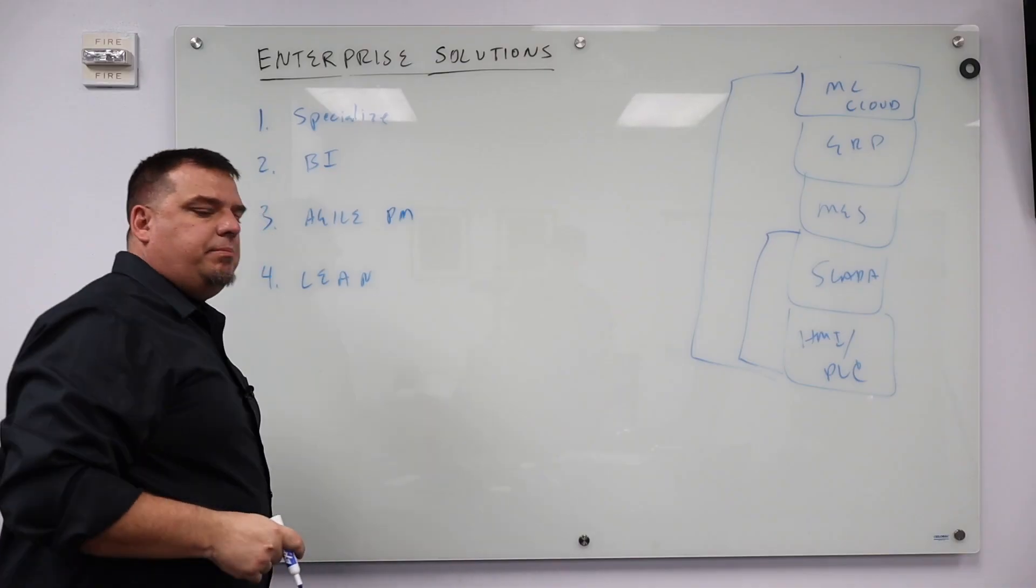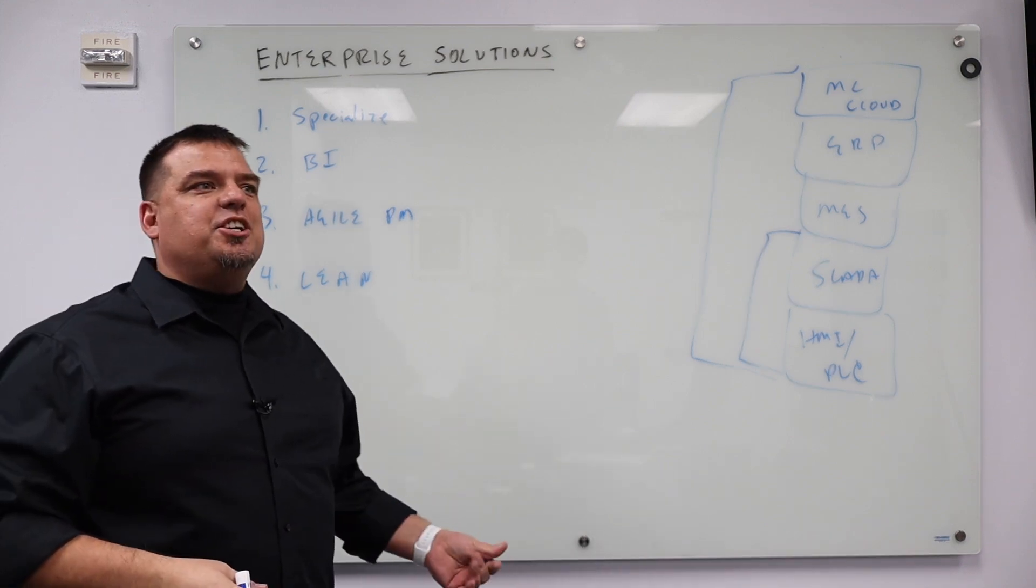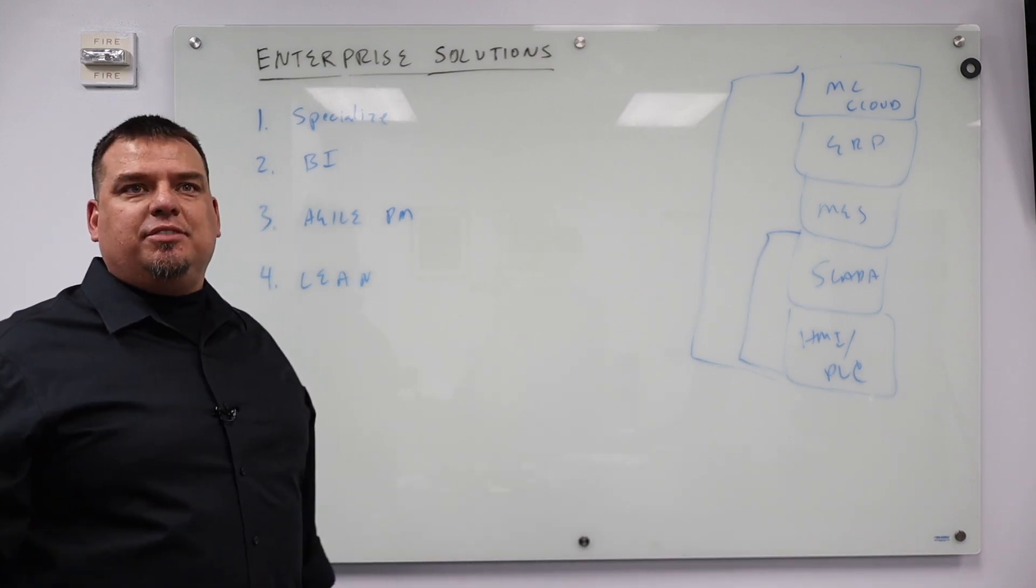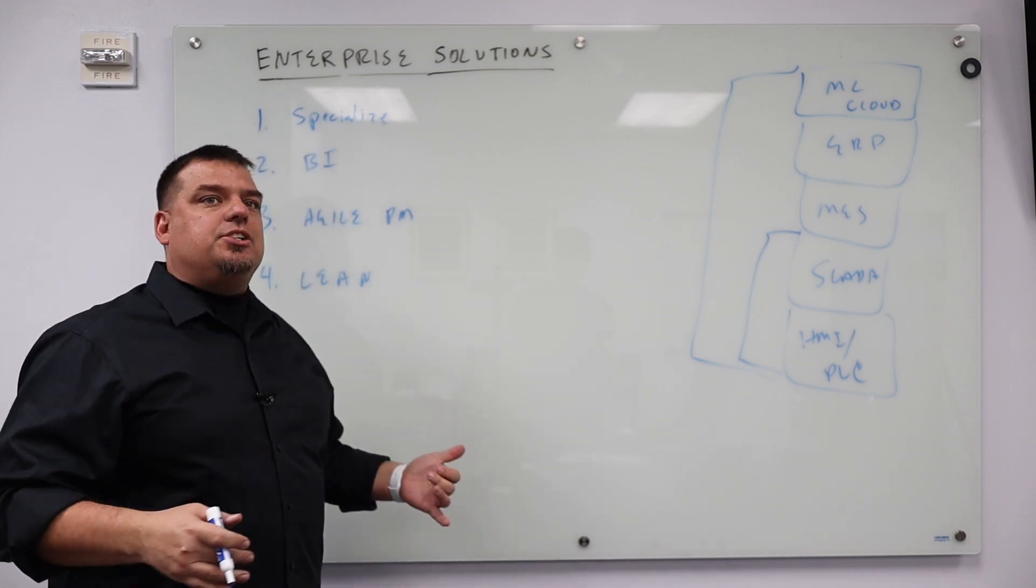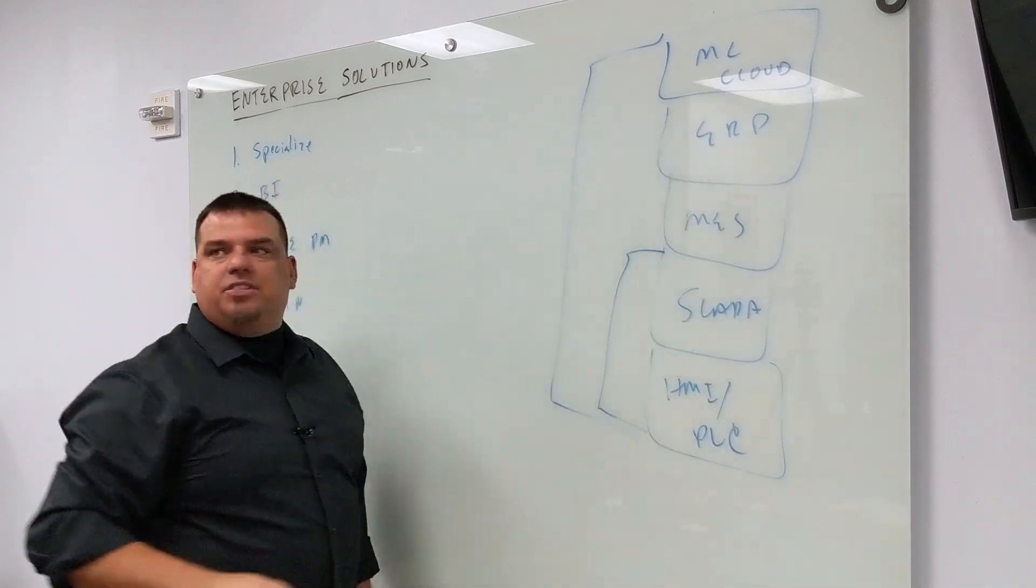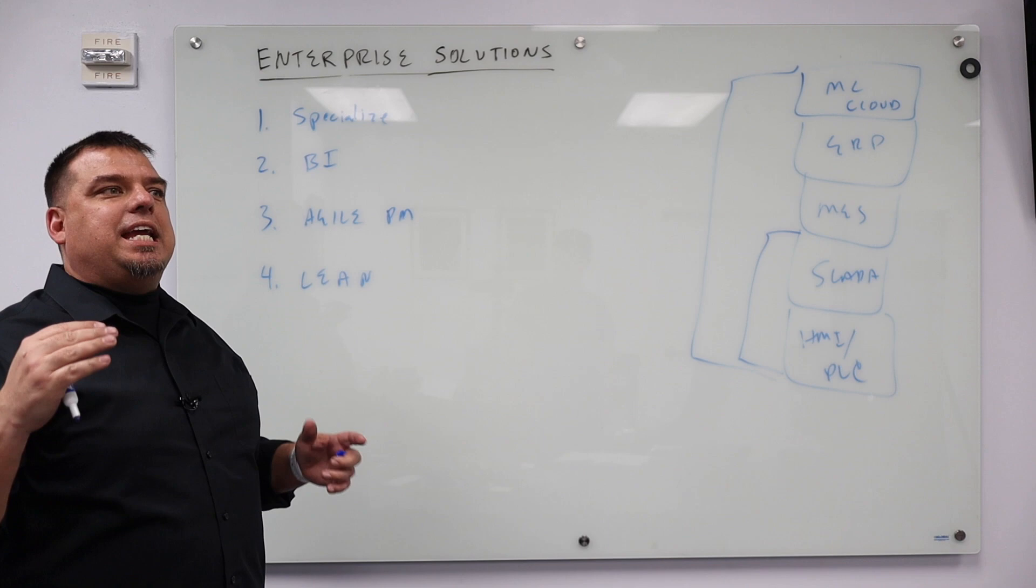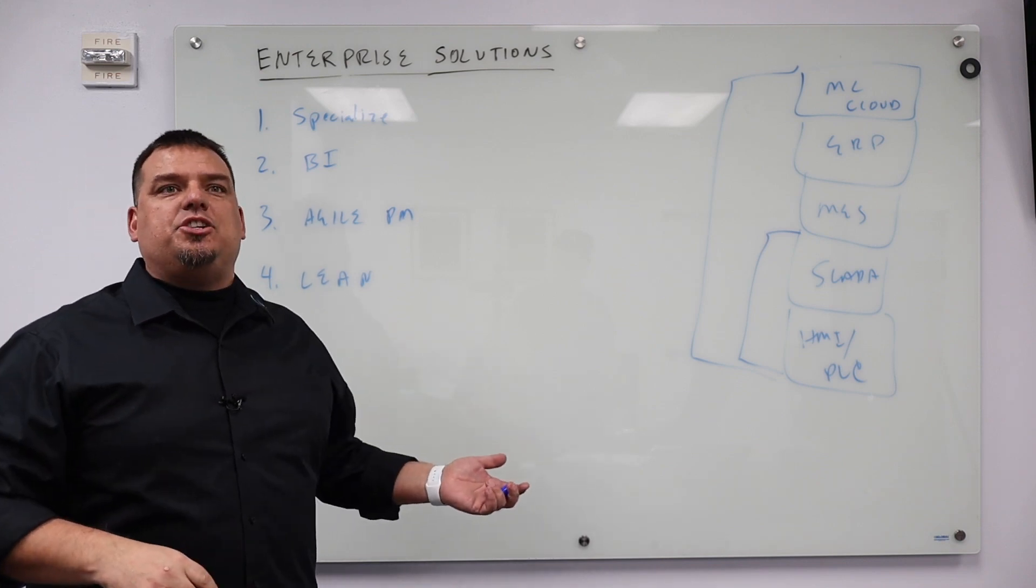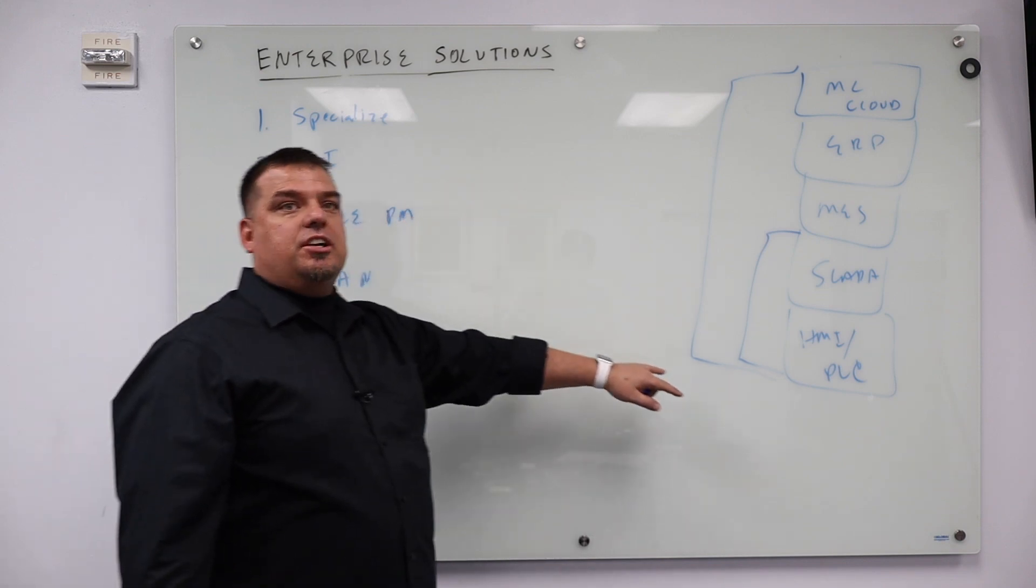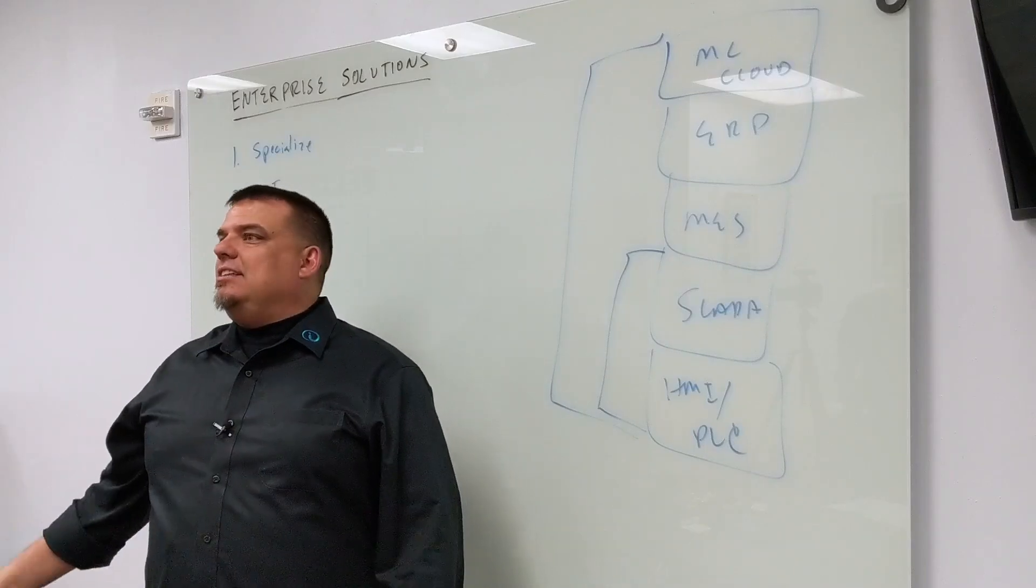Number four, they're lean. What does that mean? They don't have a billion salespeople, they don't have a billion applications engineers, they don't have a ton of administration. They're a lean operation, and there's a reason for that. The people that you need to service each layer of the stack are expensive. You can't spend all that money on administration.